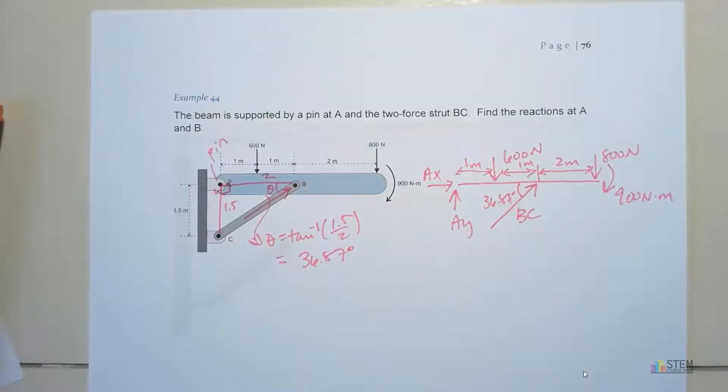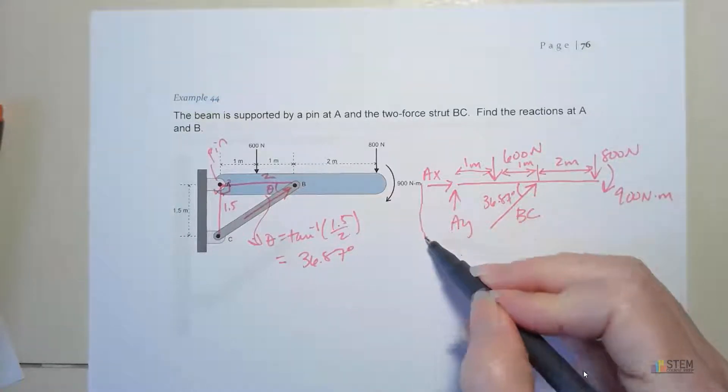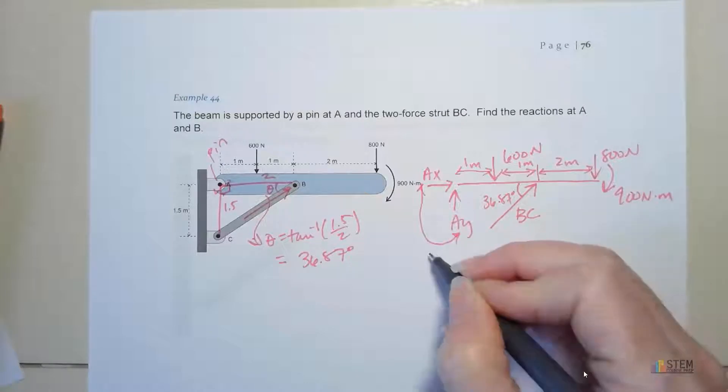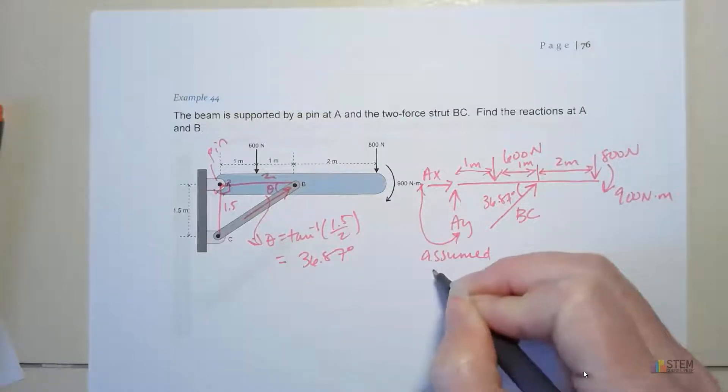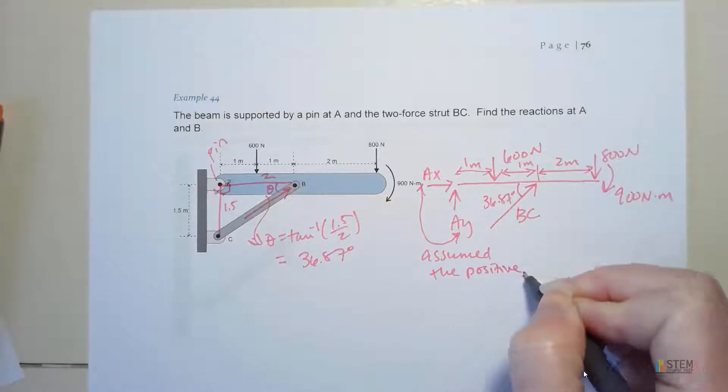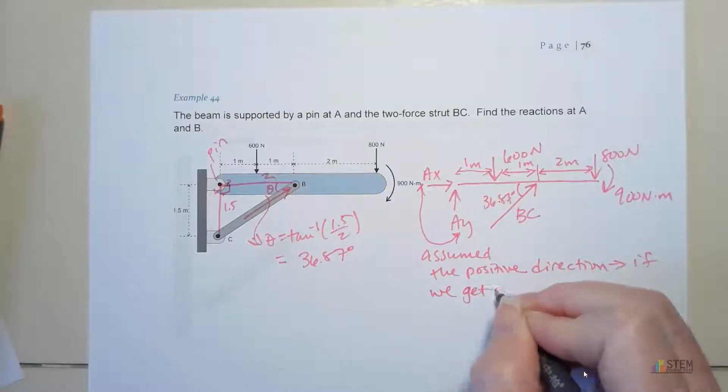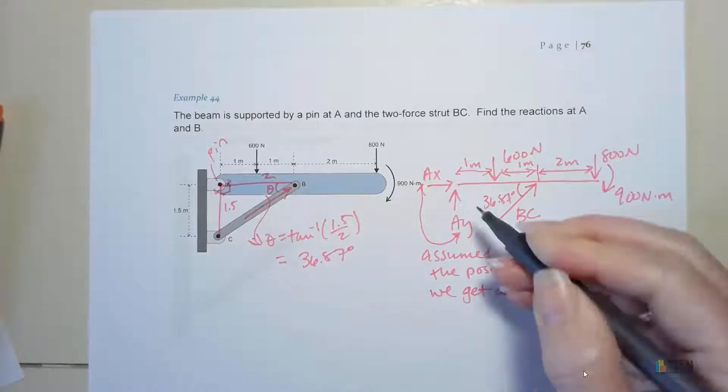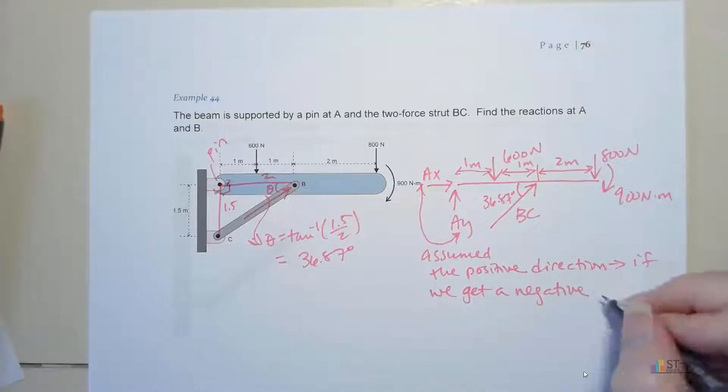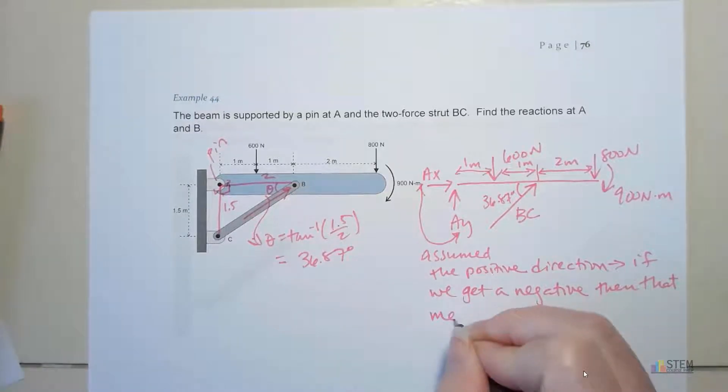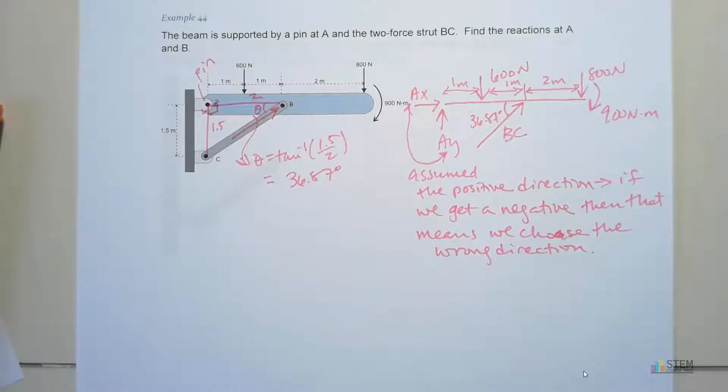Now, let's go ahead and write a note here. We just assumed the positive direction. If we get a negative value for AX or AY, that means we chose the wrong direction. That's all it means. But as long as everything is consistent, then it's okay. Now that we've got our diagram, we're ready to get started.